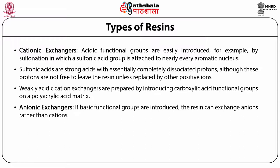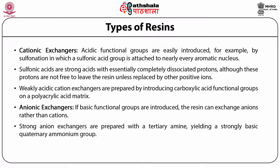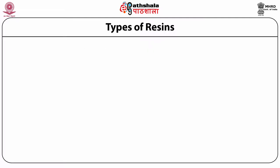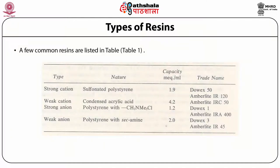If basic functional groups are introduced, the resin can exchange anions rather than cations, and such resins are known as anionic exchangers. Strong anionic exchangers are prepared with a tertiary amine yielding a strongly basic quaternary ammonium group. Weaker anionic exchangers can be prepared with secondary amines yielding a weakly basic tertiary amine. A few common resins are tabulated in Table 1.